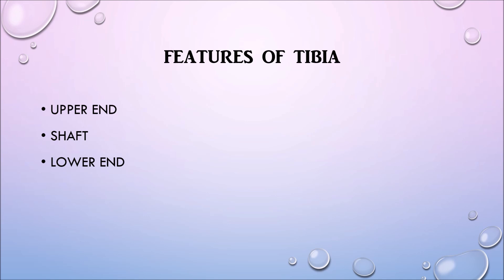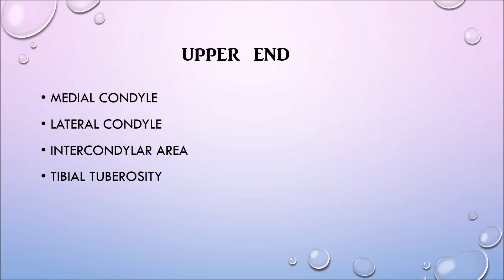Now let's move on to the features of the tibia. It has an upper end, a shaft and a lower end. The upper end consists of the medial condyle, the lateral condyle, the intercondylar area and the tibial tuberosity.